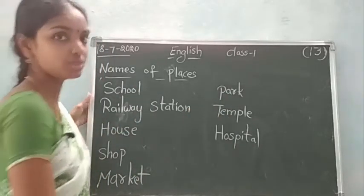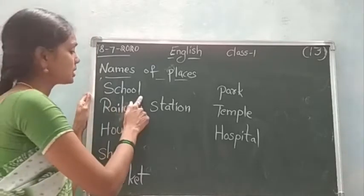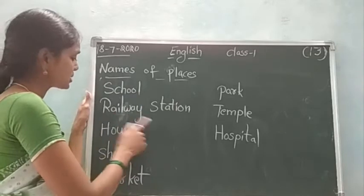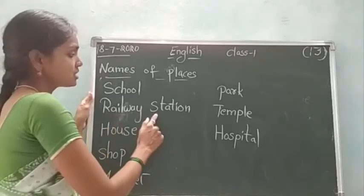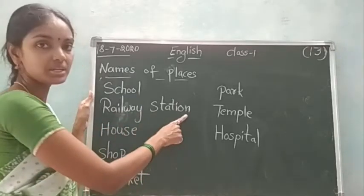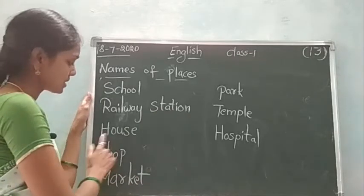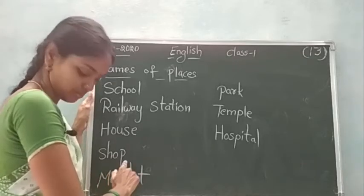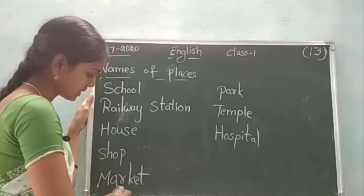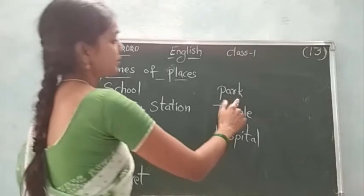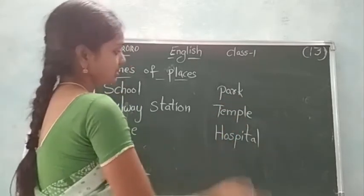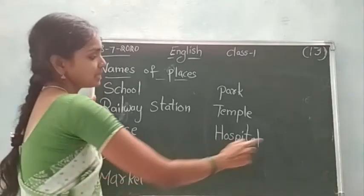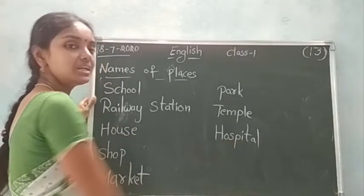Once again I will read — all of you repeat after me. School, S-C-H-O-O-L. Railway station, R-A-I-L-W-A-Y, S-T-A-T-I-O-N, station. House, H-O-U-S-E. Shop, S-H-O-P. Market, M-A-R-K-E-T. Park, P-A-R-K. Temple, T-E-M-P-L-E. Hospital, H-O-S-P-I-T-A-L. Hospital.